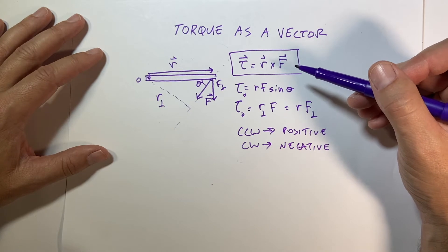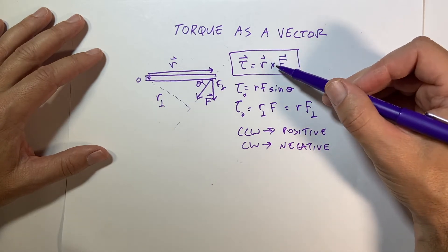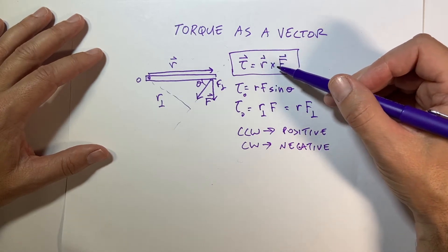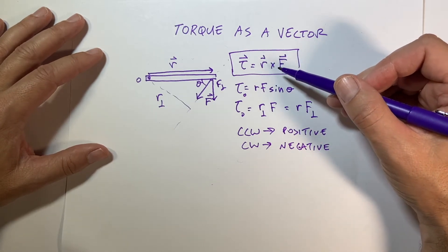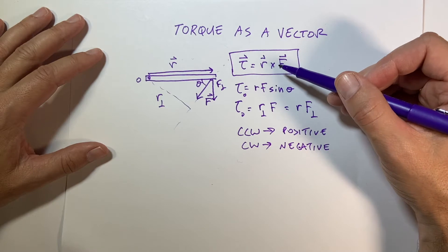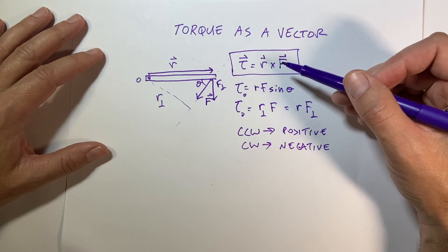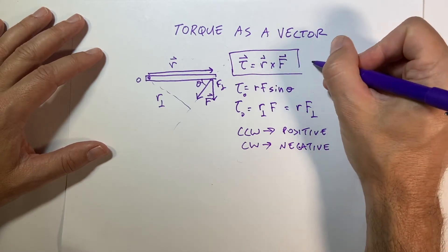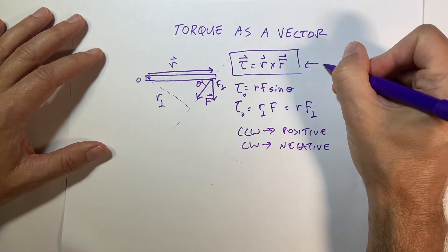Let me go over the definition of the cross product, then I'll go over the right-hand rule, and finally I will show you how to do this in Python.